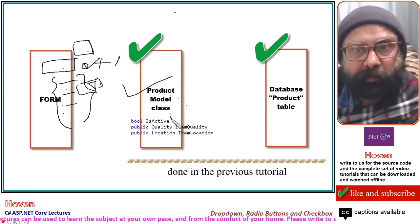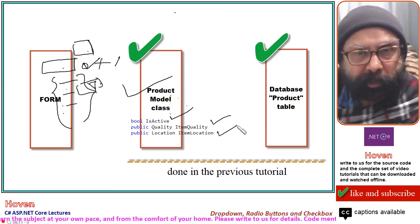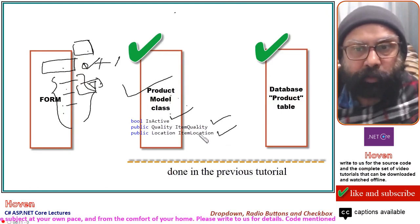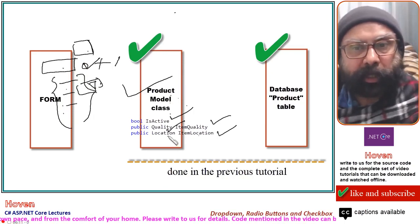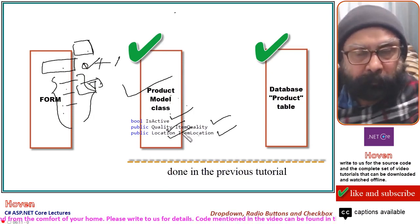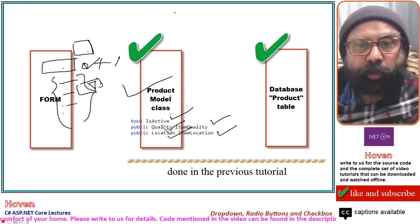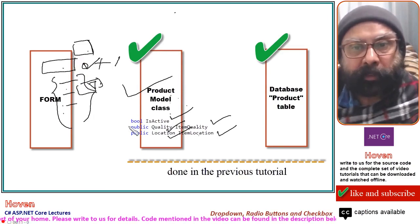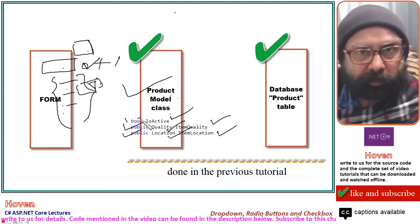We added a boolean isActive, itemQuality, and itemLocation. These two properties are based on an enumeration called Quality and an enumeration called Location. You can go through the previous tutorial to see how we made these enumerations and how we added these properties.